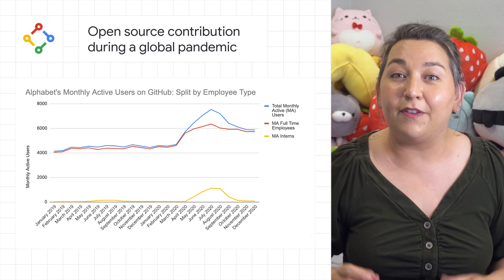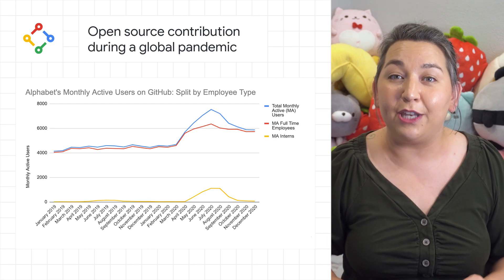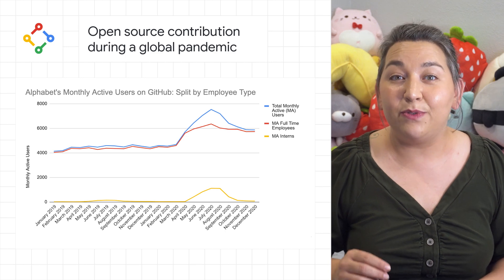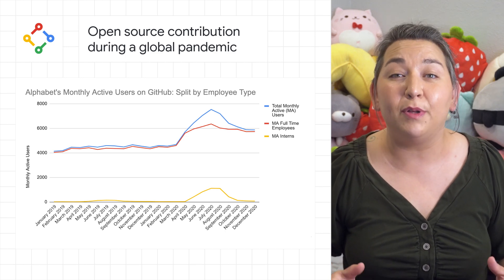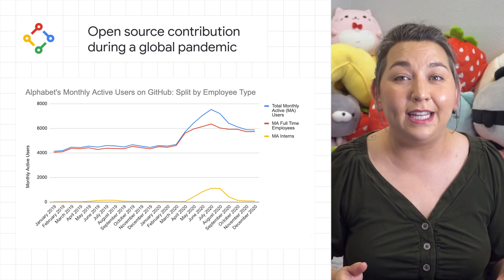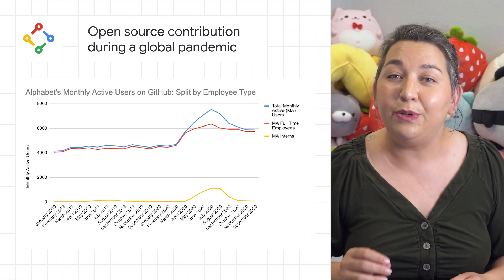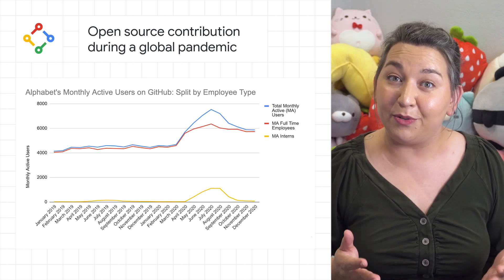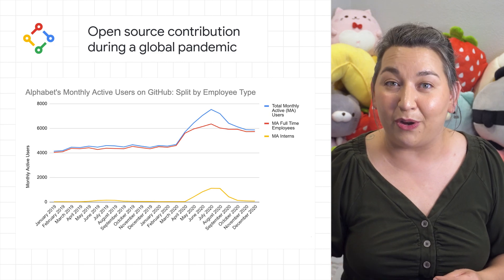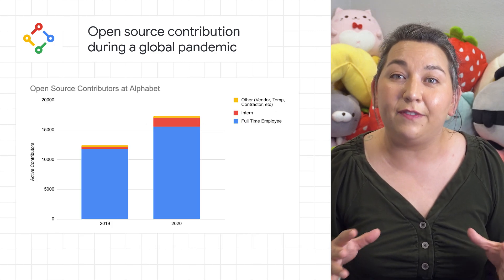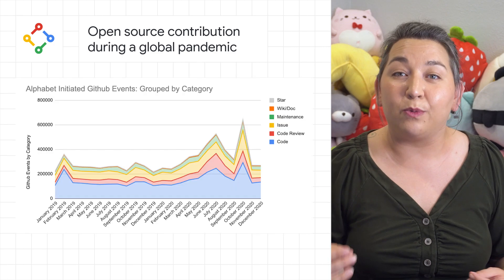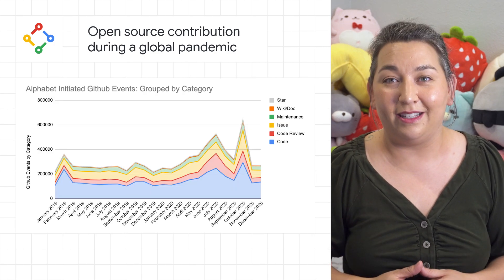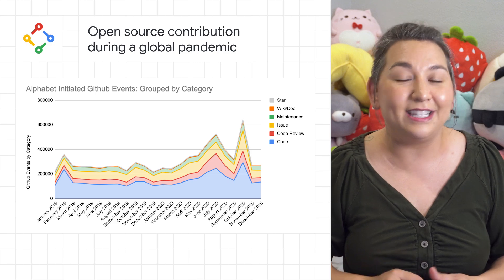The second edition of our open source program office's annual transparency report was released. This report explores the impact of the global pandemic on work, productivity, and behavior. A few key insights were that open source engagements increased as employees moved to their homes, the population of contributors grew, and repos and projects were created and interacted with. See the full report in the link in the description.